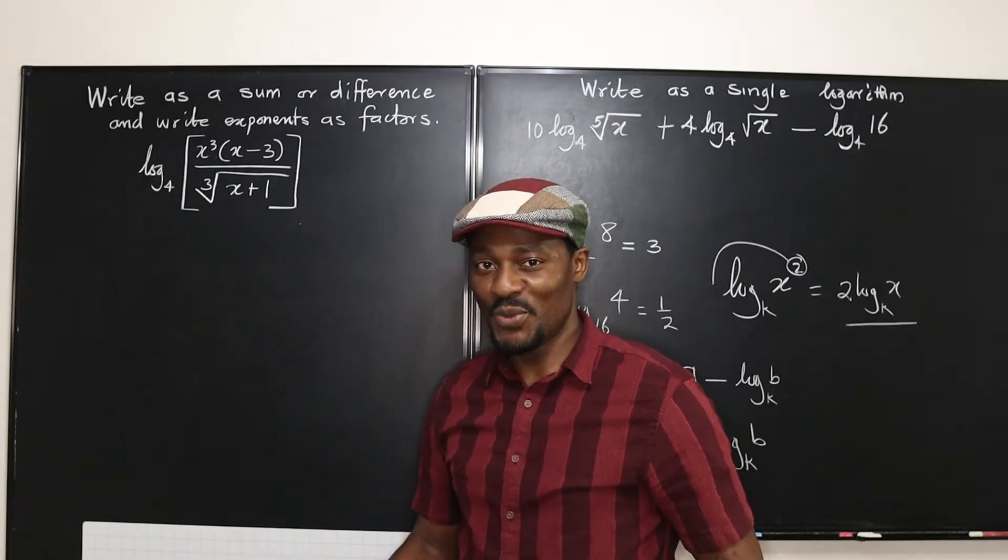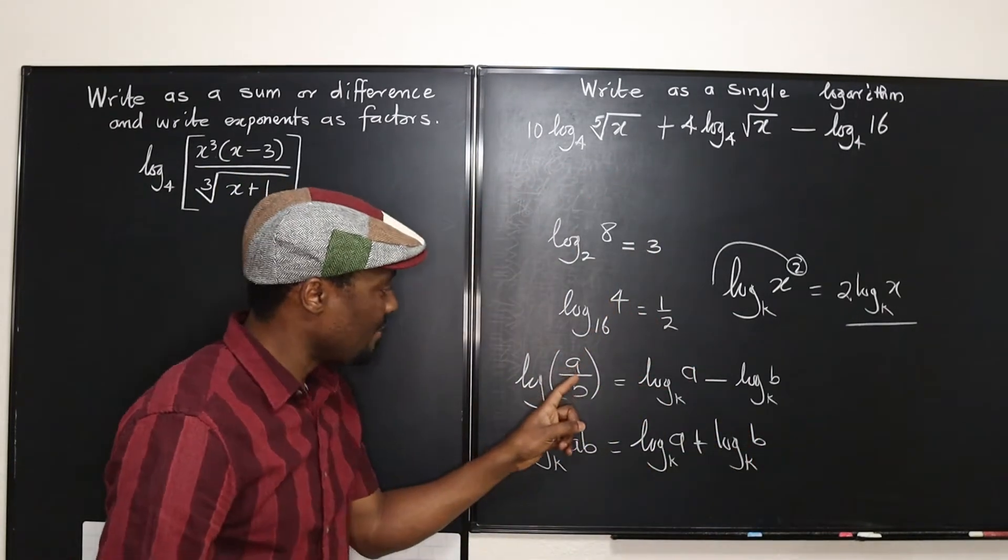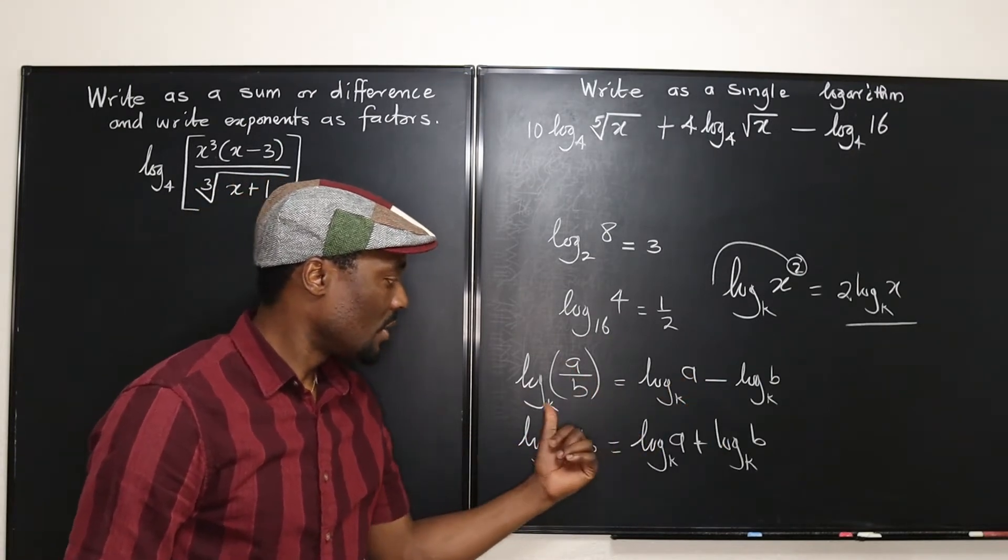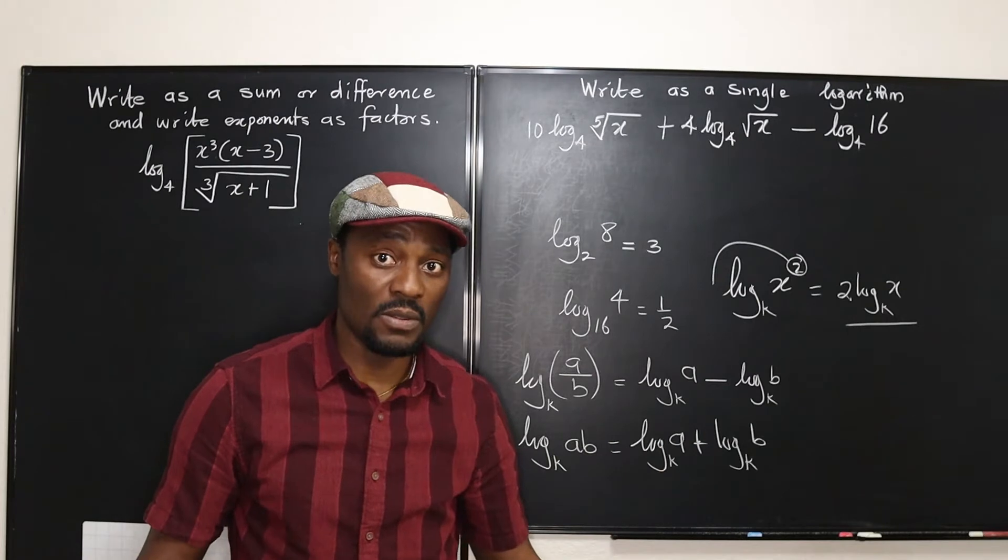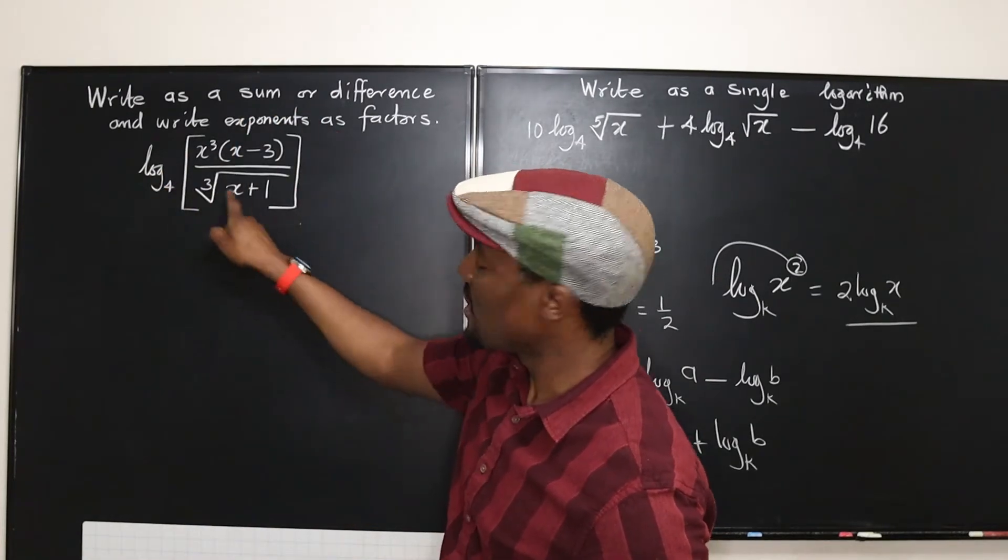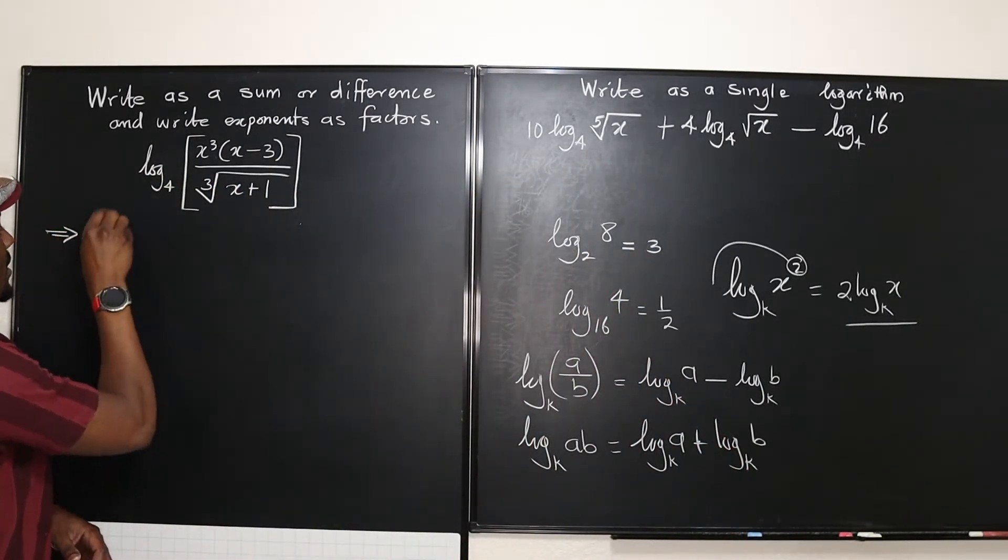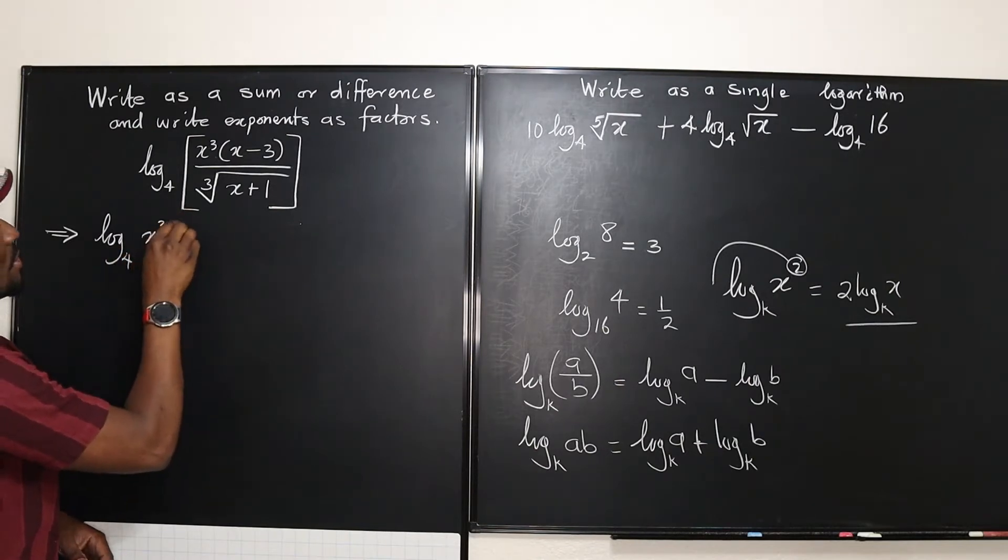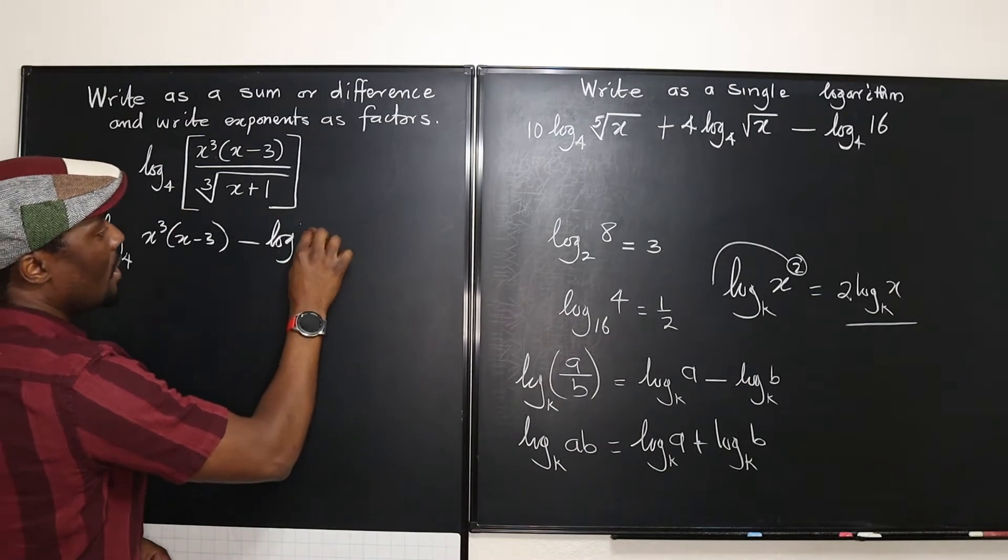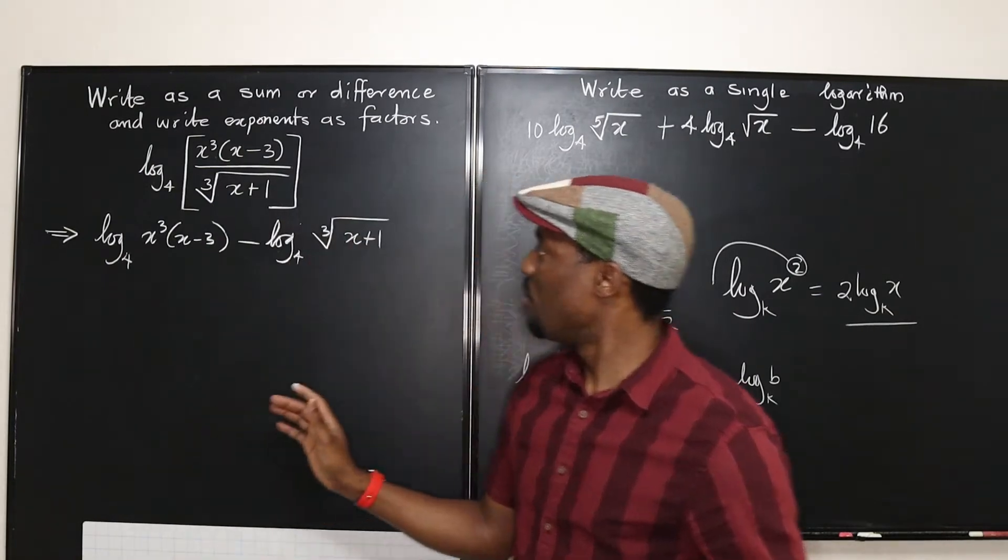So the first thing we have to do here is to look at this as a rational expression, just like we have here, A over B. And you notice that we wrote log A minus log B. That's a law of logarithm that you have to know. So that simply means we're going to have the logarithm of the top minus the logarithm of the bottom. That's what it means. So let's write it. So we're going to have that this is logarithm to base 4 of x cubed into x minus 3 minus the logarithm to base 4 of the cube root of x plus 1. So we've taken the first step at this point.